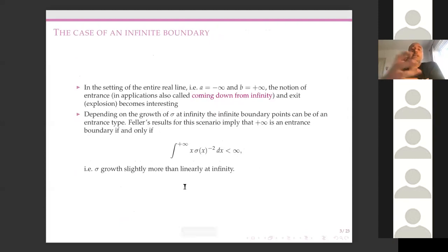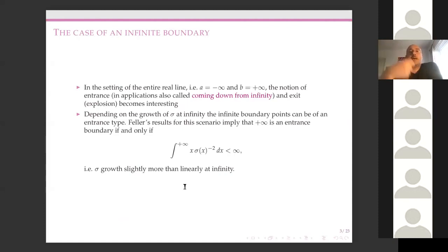The interesting cases are when A is minus infinity and B is plus infinity — and for us, when both A and B are minus and plus infinity. We're interested in entrance at these boundary points. For example, setting B to be plus infinity, we want to know if we can enter from the boundary point plus infinity. This has increasingly commonly been called 'coming down from infinity.' Feller resolved this issue and showed that plus infinity is an entrance boundary if and only if a certain integral test holds.